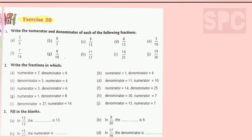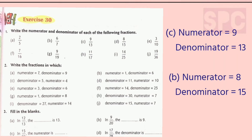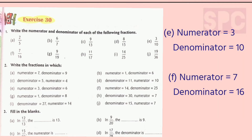The numeral which is written above the line is called the numerator and the numeral which is written below the line is the denominator. So it's very simple. In part A, numerator will be 2 and denominator will be 5. Similarly, in part B, numerator will be 6 and denominator is 7. In part C, numerator is 9 and denominator is 13. Part D, the numerator will be 8 and denominator is 15. Part E, the numerator is 3 and denominator is 10. Part F, the numerator is 7 while denominator is 16.